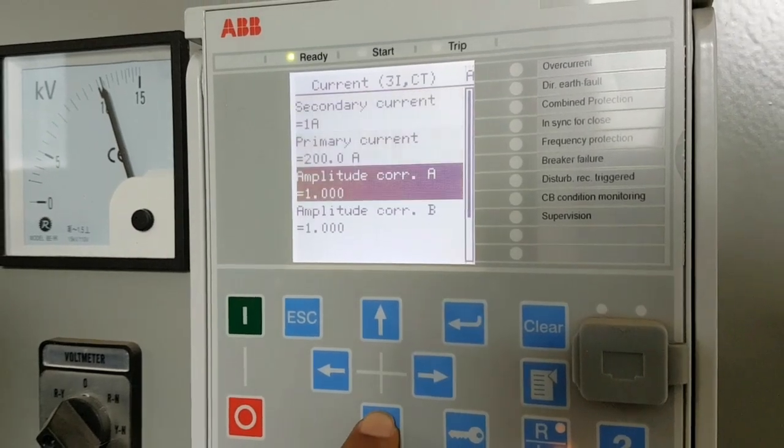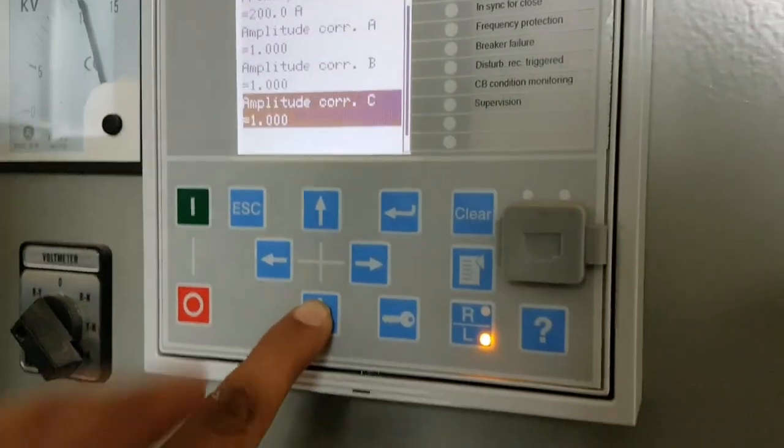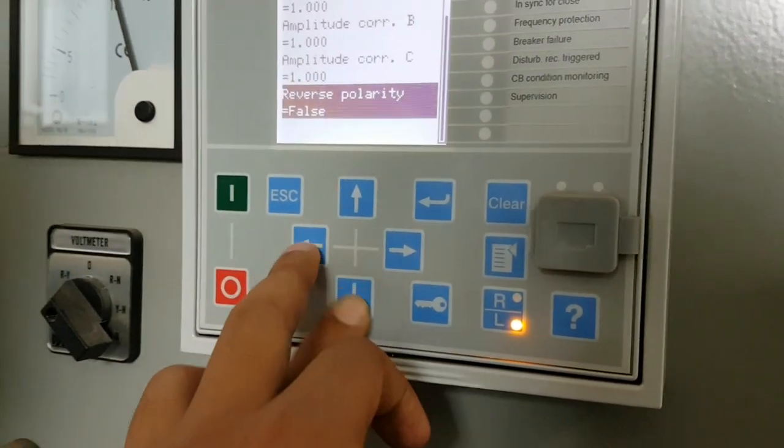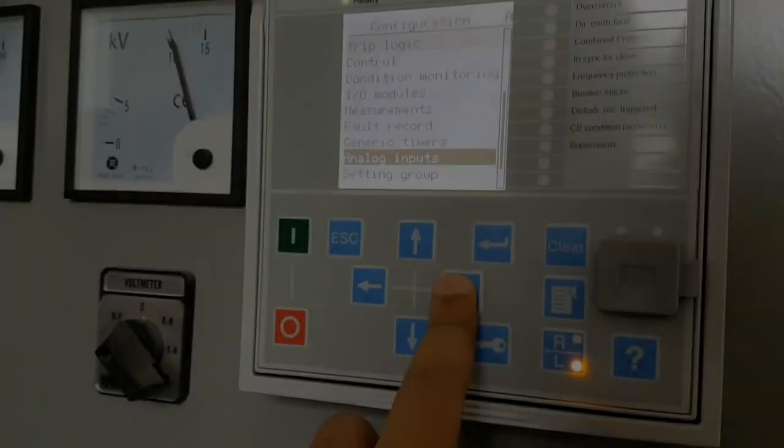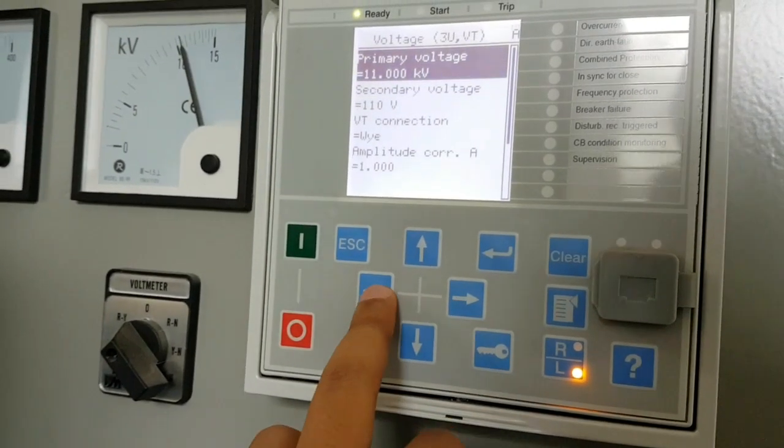Secondary current need not be changed because one or five will be the only two options. The rest of all this will be same, and this is the IO current.